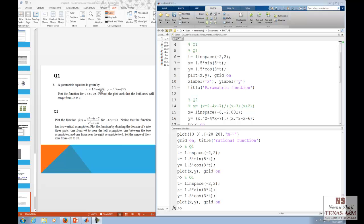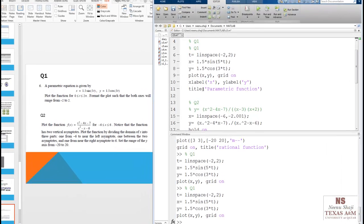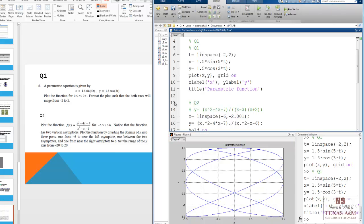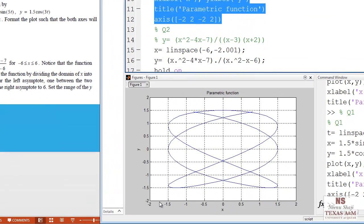Question 1. A parametric equation is given by the following equations. Plot the function for t between 0 and 2 pi. Format the plot such that both the axis will range from negative 2 to 2. Define t. Evaluate x and y. Use the plot function. Then plot x comma y. Grid on. X label, y label. And put a title. Now, let's just run this graph. We get this. Now, the question tells, format the plot such that both axis will range from negative 2 to 2. So here we can see that the axis is ranging from negative 1.5 to 1.5 for both x and y. To change the axis limits, we have the axis command. So you put negative 2, 2 for the x axis and negative 2, 2 for the y axis. Now we can run this again. And we get the desired axis limits.